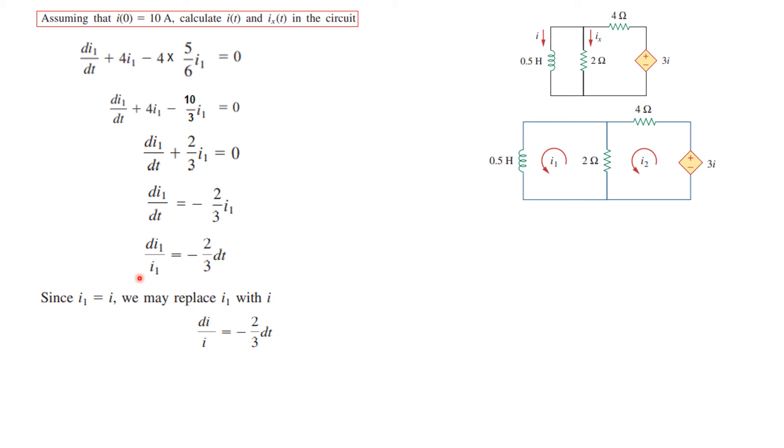We bring I₁ here and take dt on the right-hand side. Since we are interested to find I, and I₁ and I are the same, we replace I₁ by I. So our equation will be dI/I = -2/3 dt. Now we are ready to take the integral on both sides.